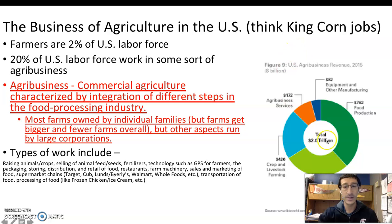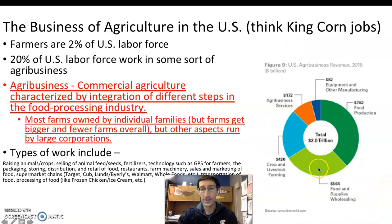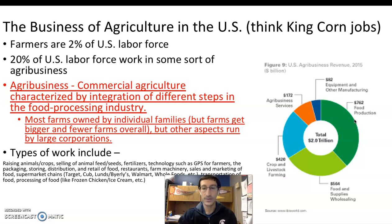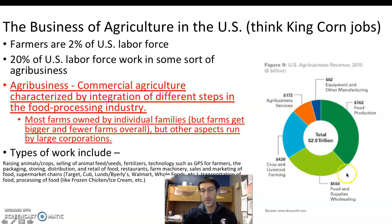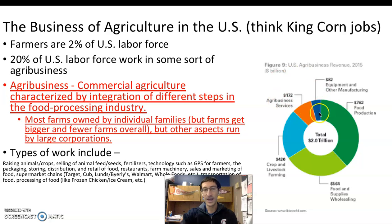Agribusiness is a $2 trillion industry in the United States. A large part of that revenue comes from food production and processing, which is about a third of it. The actual crop and livestock raising and farming is about a fifth. Another third is the actual food and supplies wholesaling — selling food and supplies and equipment like tractors, plows, and irrigation systems. It's more than just the actual farming that takes place; farming is a large part, but not the largest part of agribusiness.